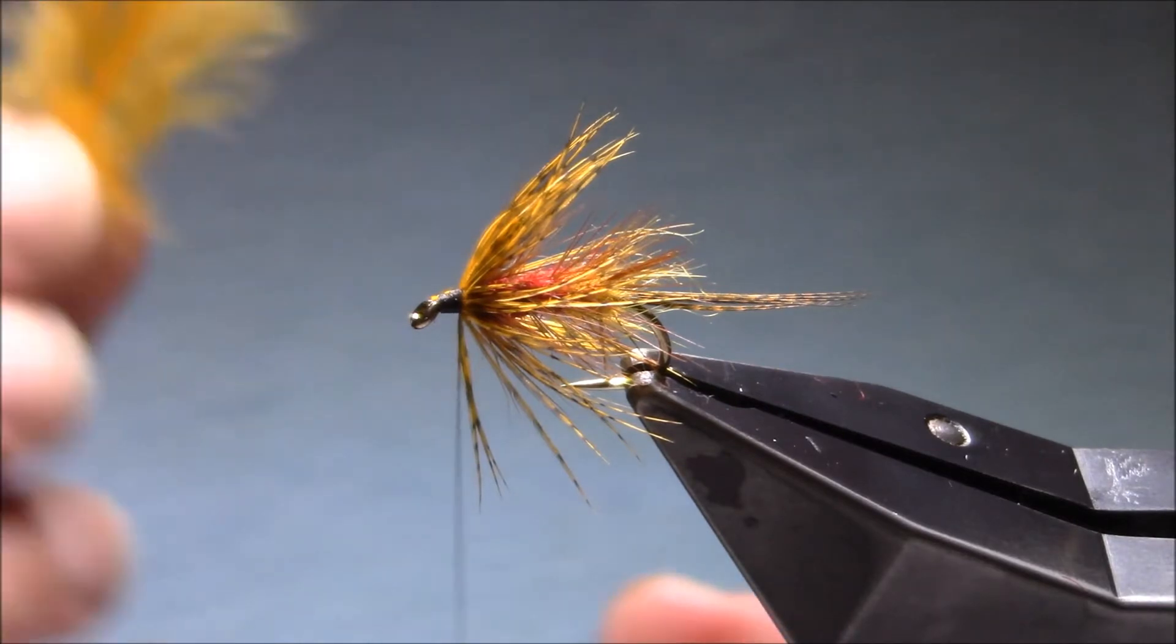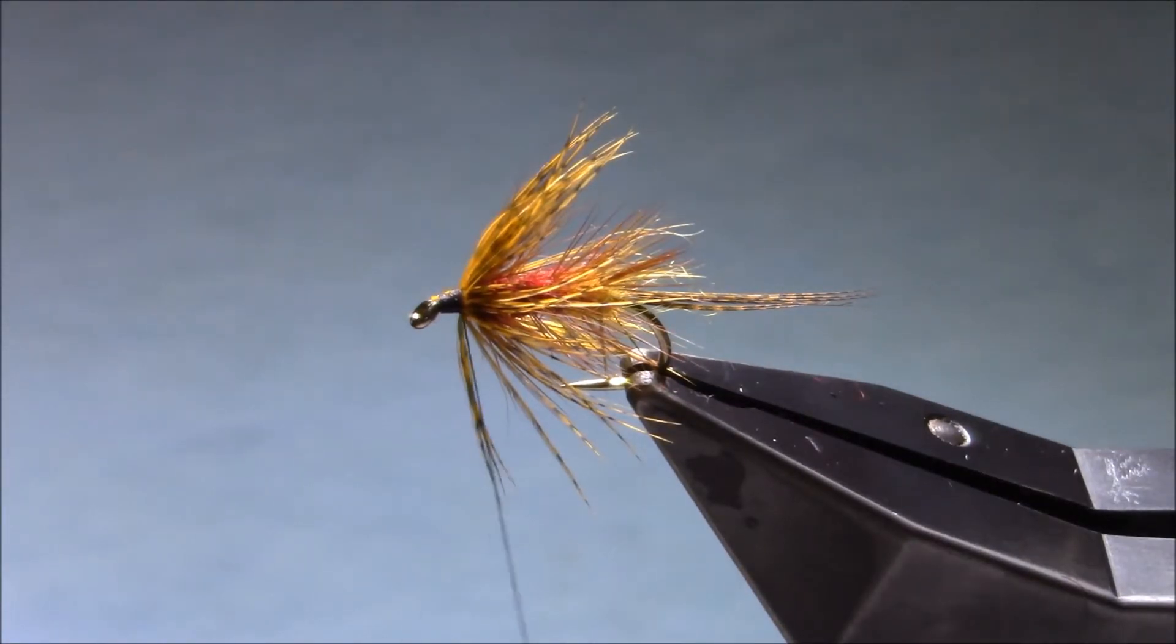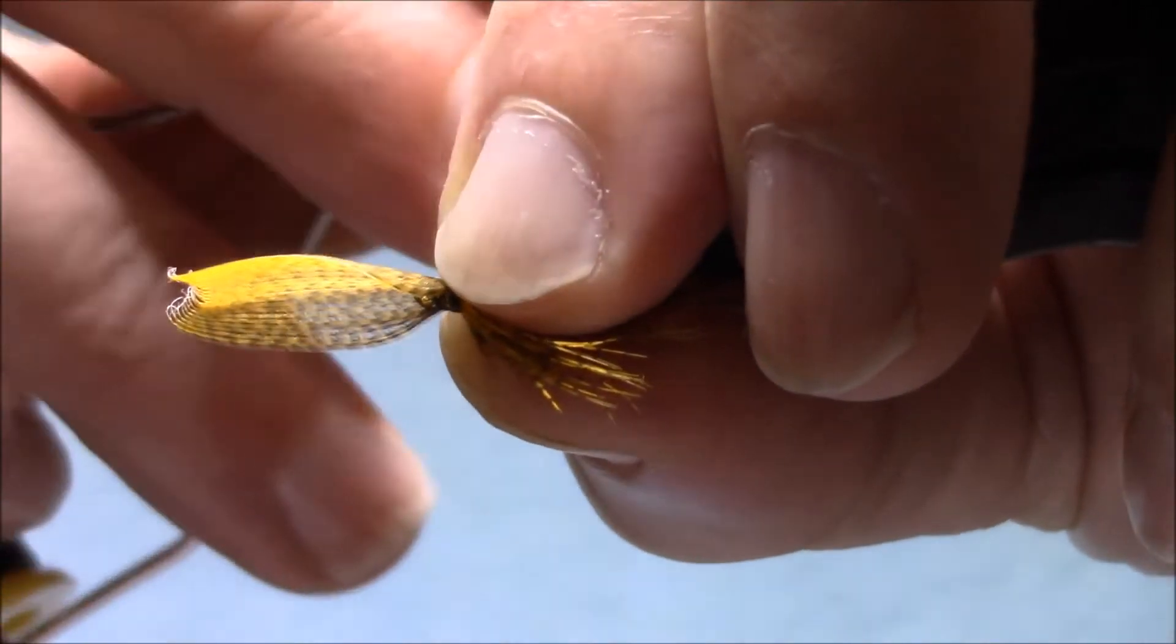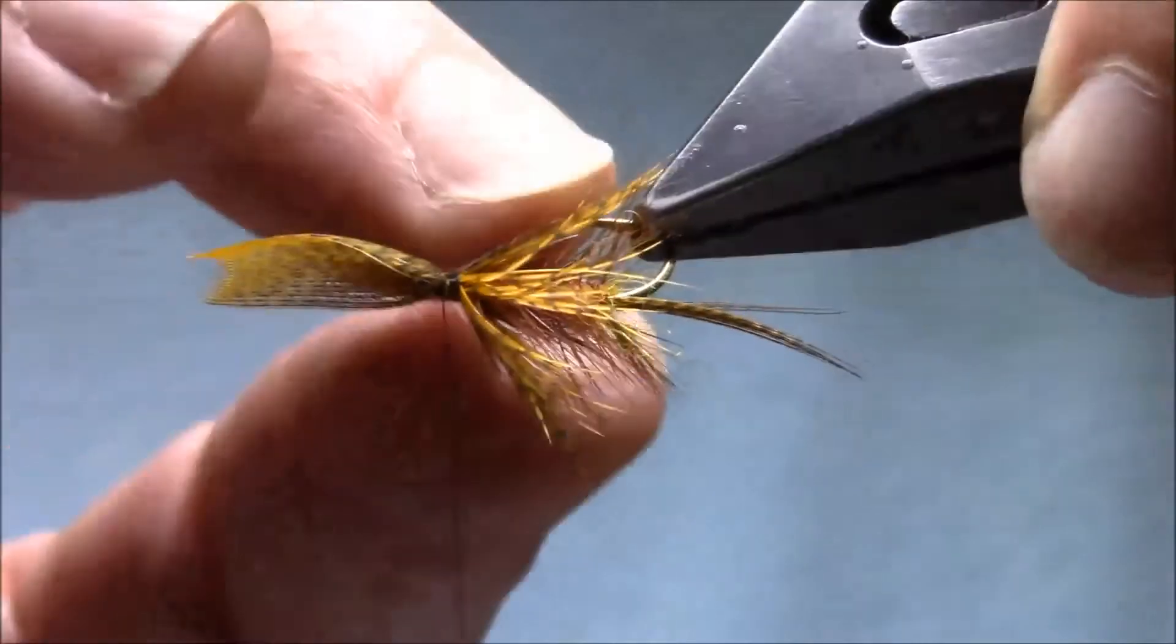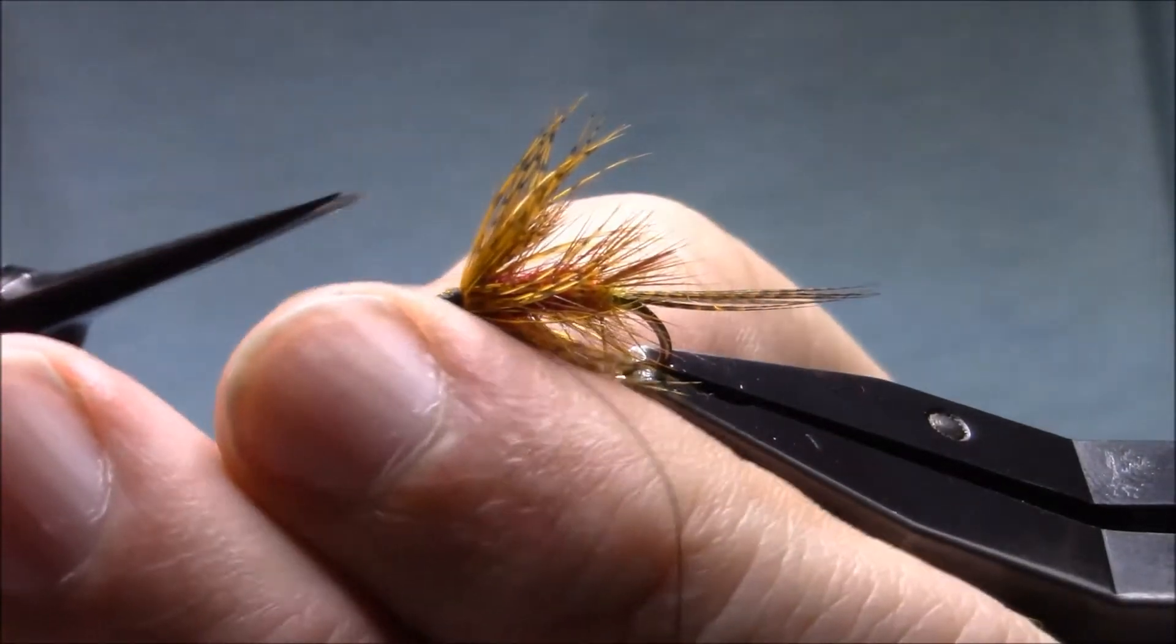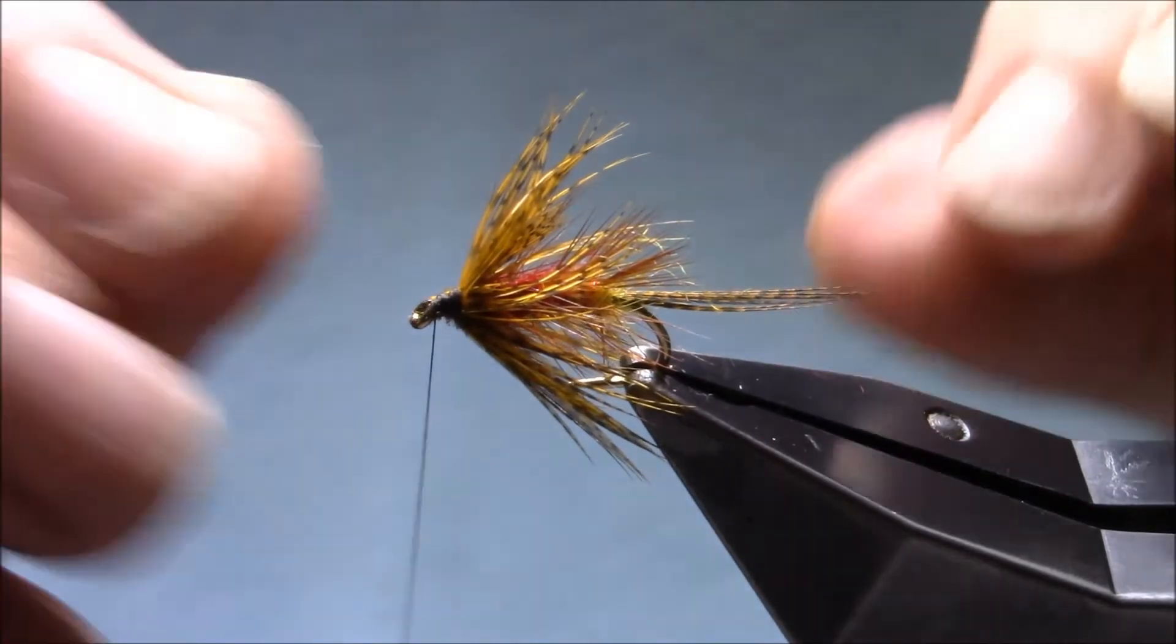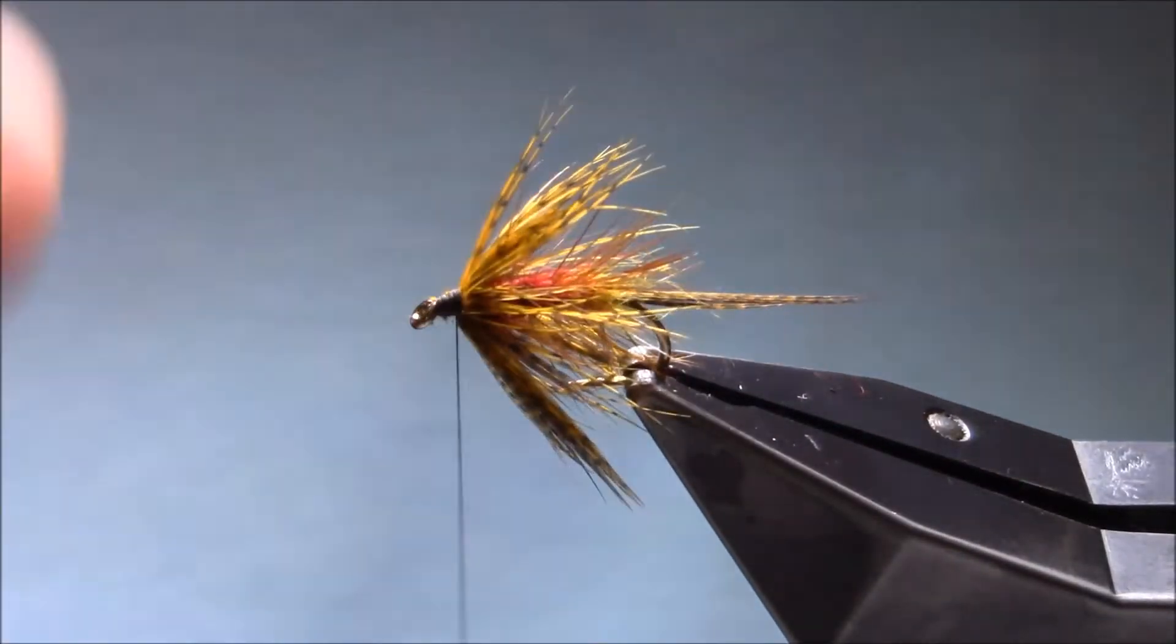So again, the same bronze mallard dyed golden olive. I'm just going to take a section out for the beard or the throat. Just have a little pinch and loop up. Sit quite well. Just clip off that excess. Tidy up.